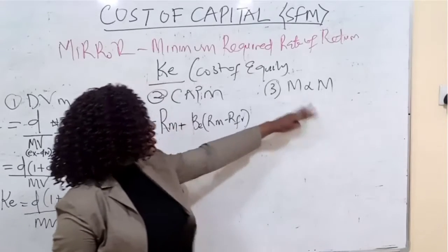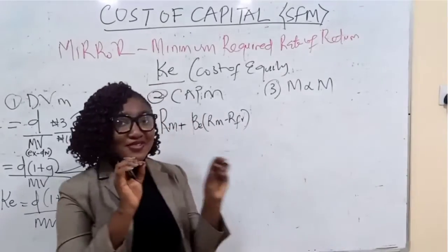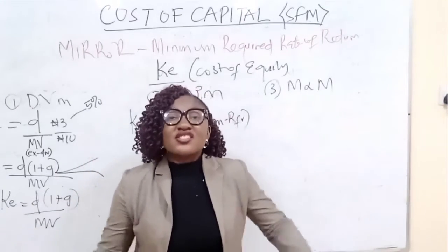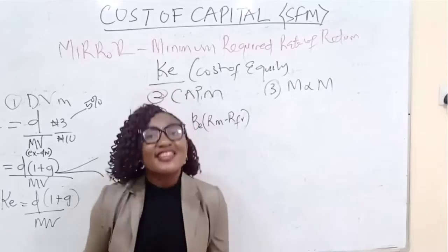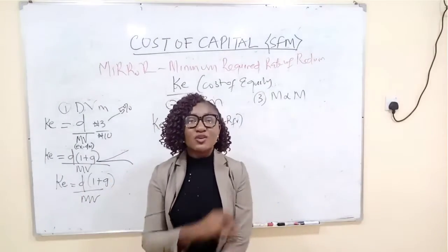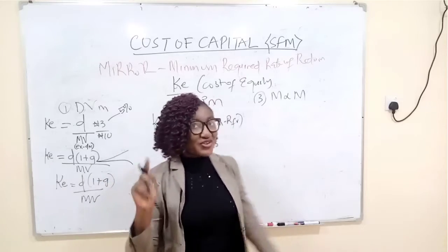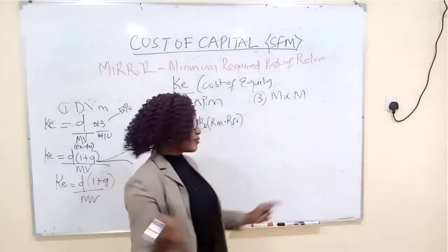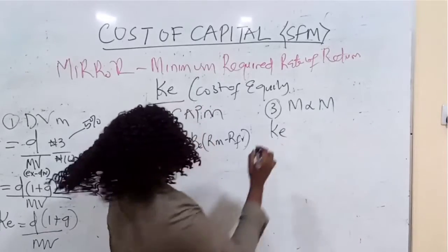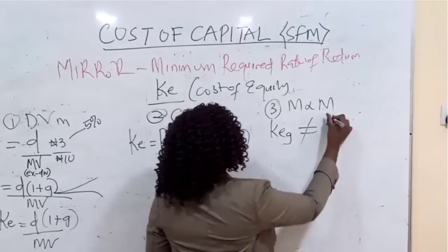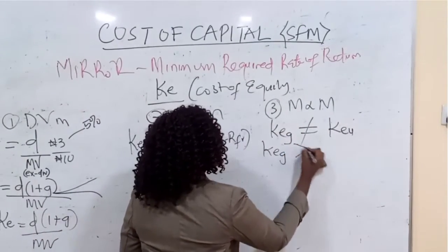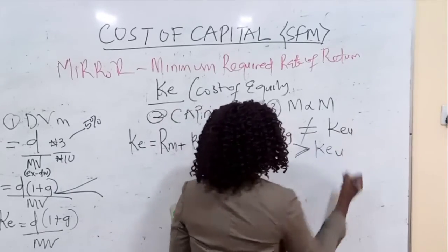Now let's move to the third approach: Modigliani and Miller, two economists who argued around 1958–1959 that you cannot determine cost of equity without considering whether the company is geared or ungeared. Their argument went through different phases with various assumptions, and the summary is that the cost of equity of a geared company is not the same as the cost of equity of an ungeared company. Specifically, the cost of equity of a geared company must always be greater than that of an ungeared company.